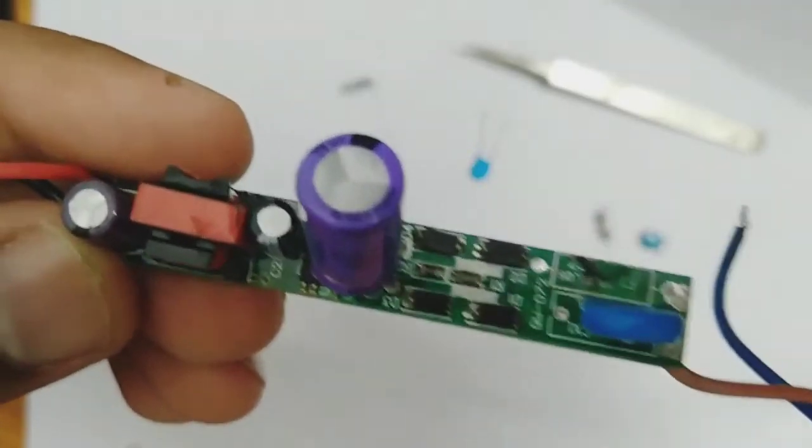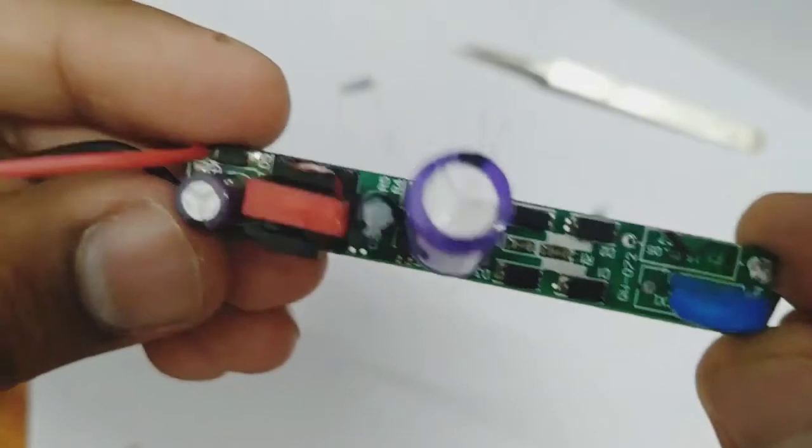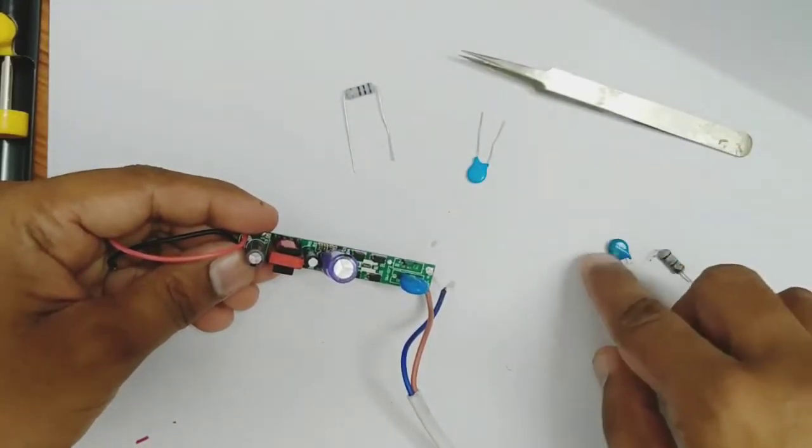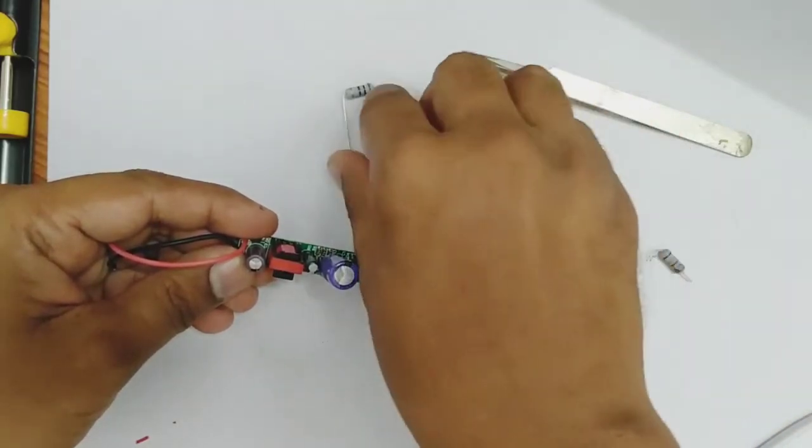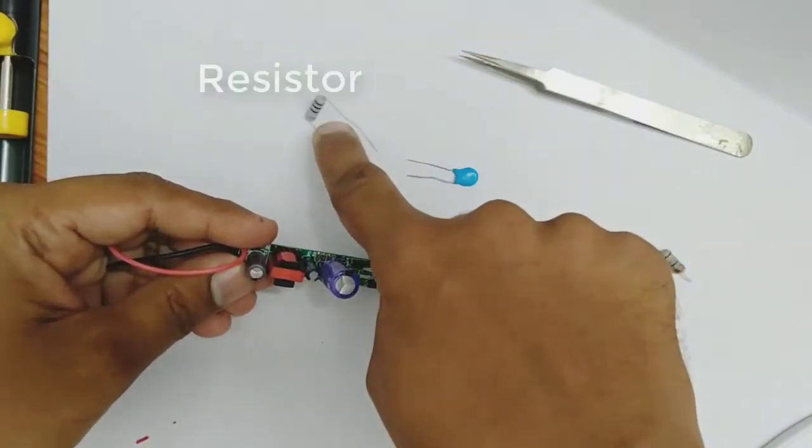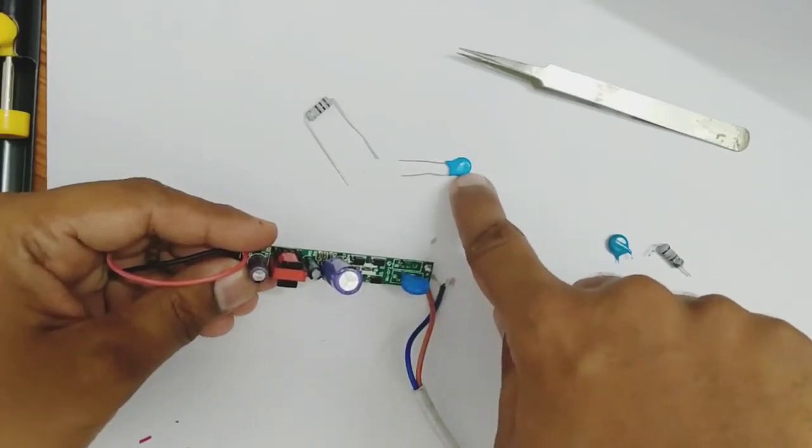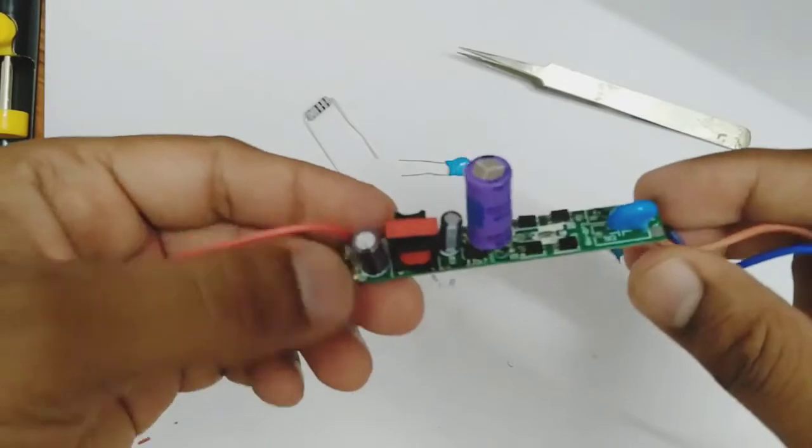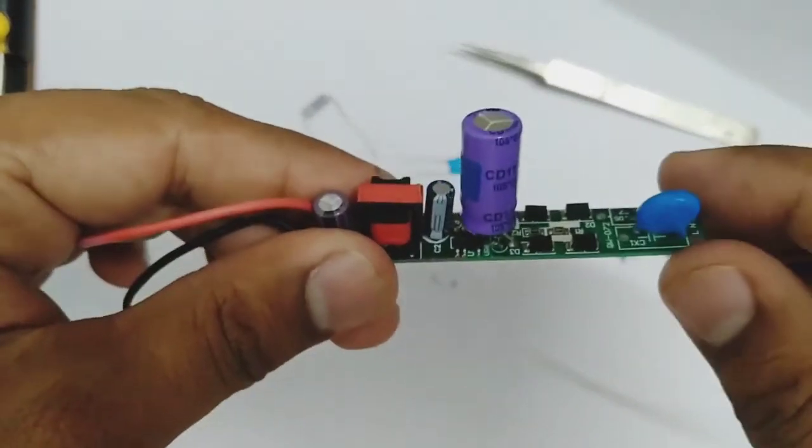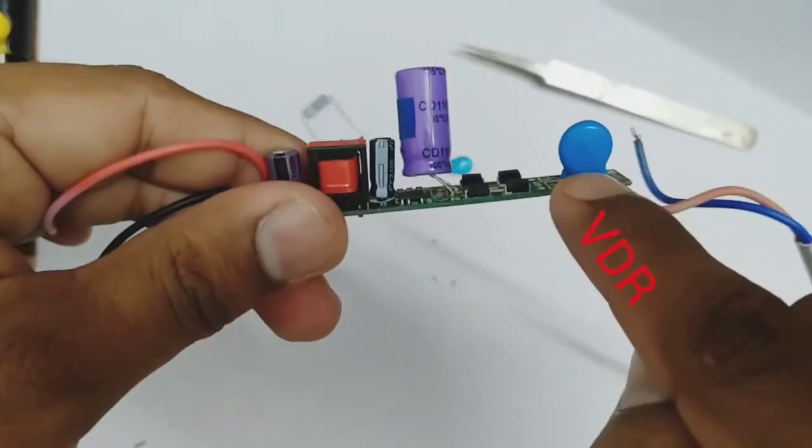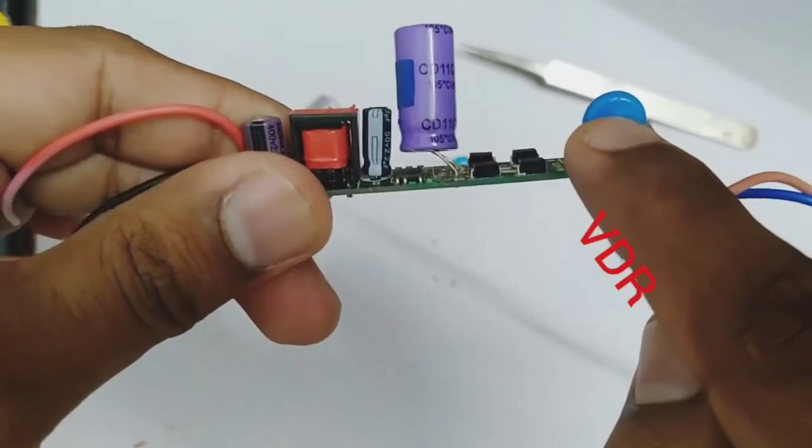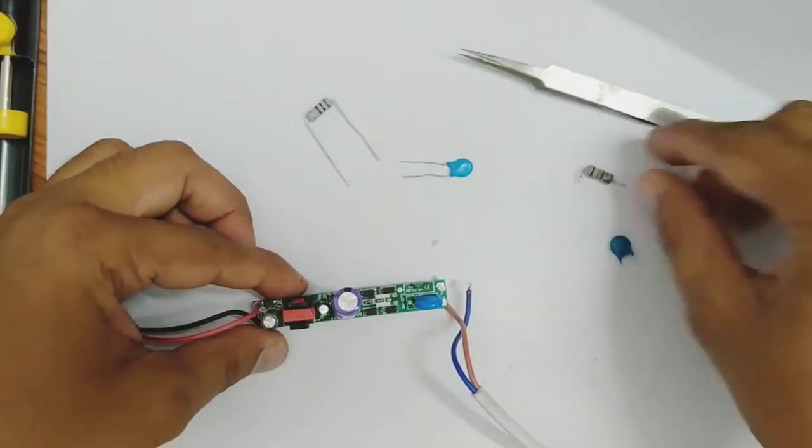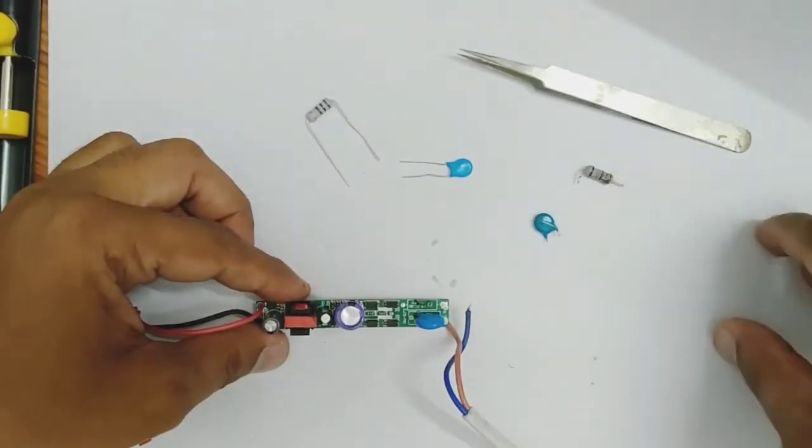As you can see I have removed the faulty parts from the circuit. I place them here. I am going to replace these two parts with new ones: this resistor and this capacitor. Usually in LED tube lights the problem occurs in three parts: in the VDR or in the resistor and capacitor.